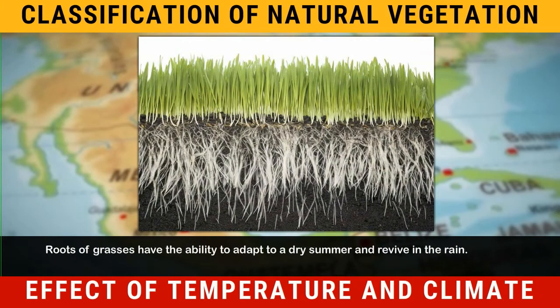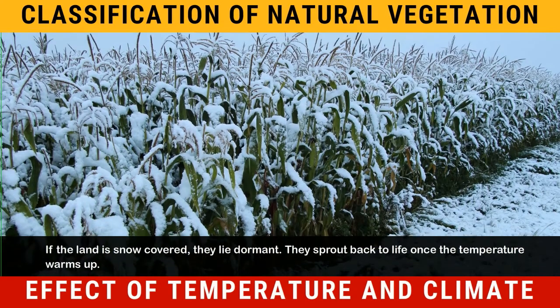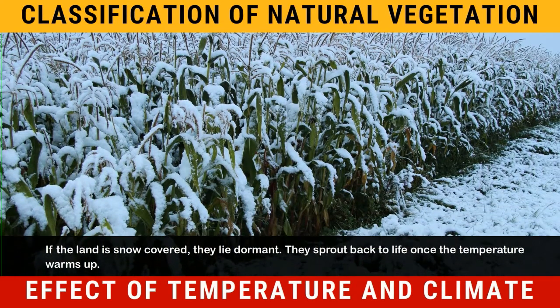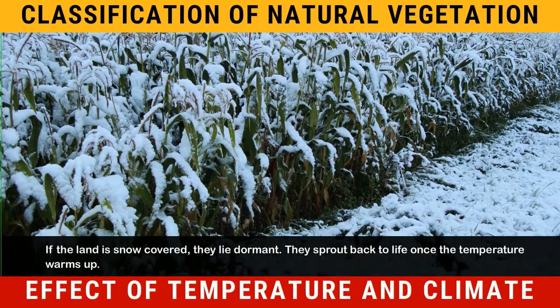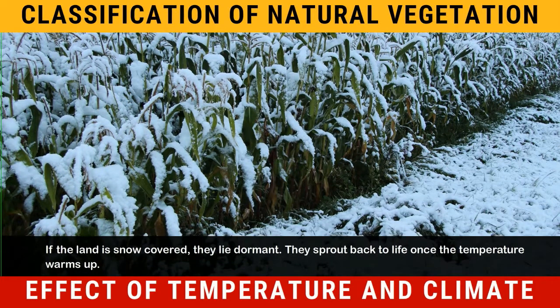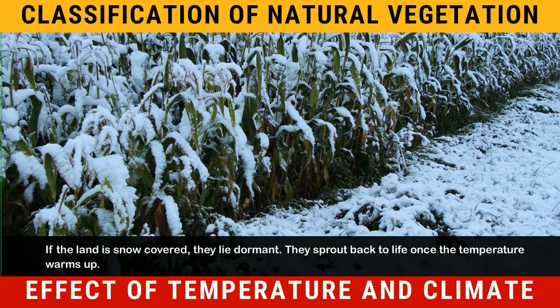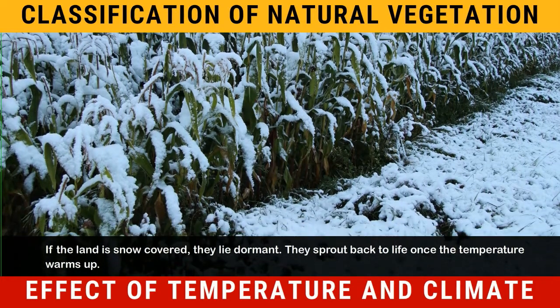Roots of grasses have the ability to adapt to a dry summer and revive in the rain. If the land is snow-covered, they lie dormant. They sprout back to life once the temperature warms up.